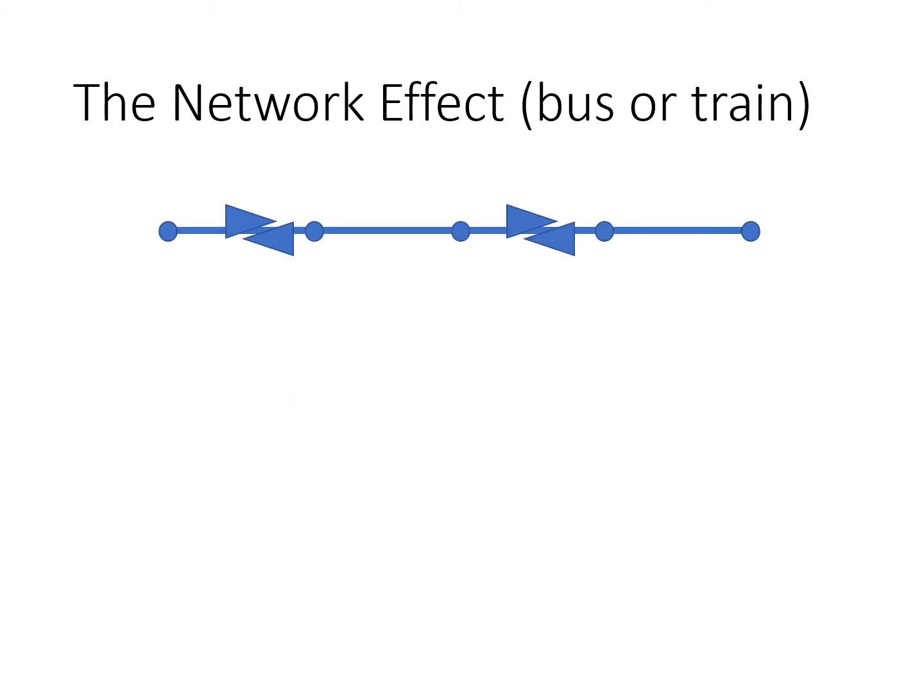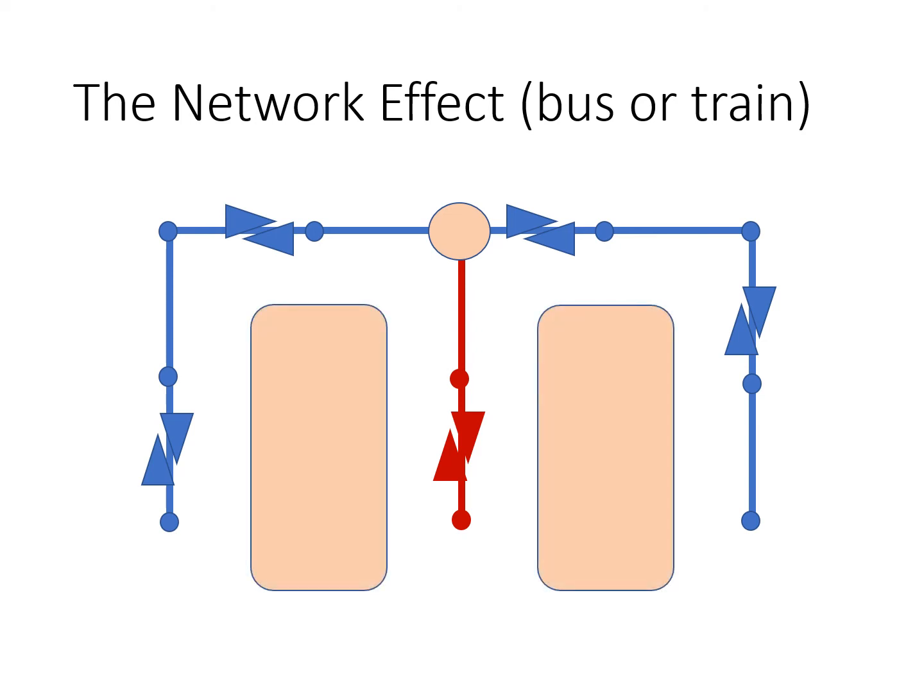We can extend the original line on both ends and even add a new line in the middle. When we add the new line, we introduce a transfer for some trips. Passengers hate transfers. Buses, and especially train lines, are typically quite far apart, and we end up with large areas that are underserved. Some trips may involve a significant detour.